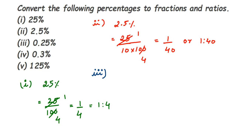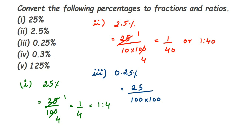Next we have 0.25%. After the decimal there are two digits, so it becomes 25 upon 100. Since we also have to remove the percentage sign and divide by 100, we place another 100 in the denominator — these two multiply together to give 25 upon 10000. Cancelling in the 25 times table gives 1 upon 400. As a ratio it will be 1 is to 400.